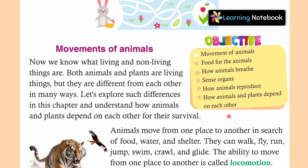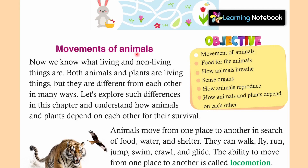In this chapter, friends, first we will understand the concept of movement of animals. Then we will move to our next topic, which is food for the animals, how animals breathe, sense organs, how animals reproduce, how animals and plants depend on each other. In this video, we are going to learn a lot of concepts about animals and plants. So let's start with our first topic: movements of animals.